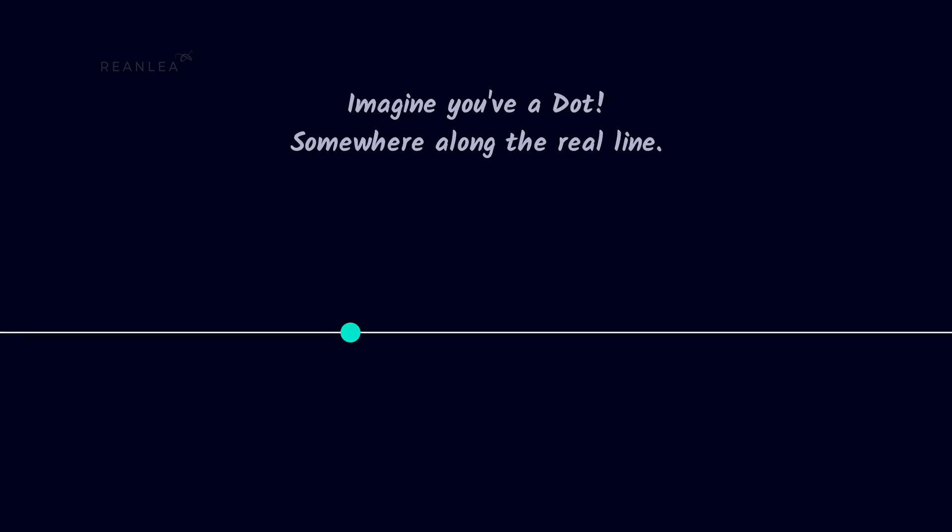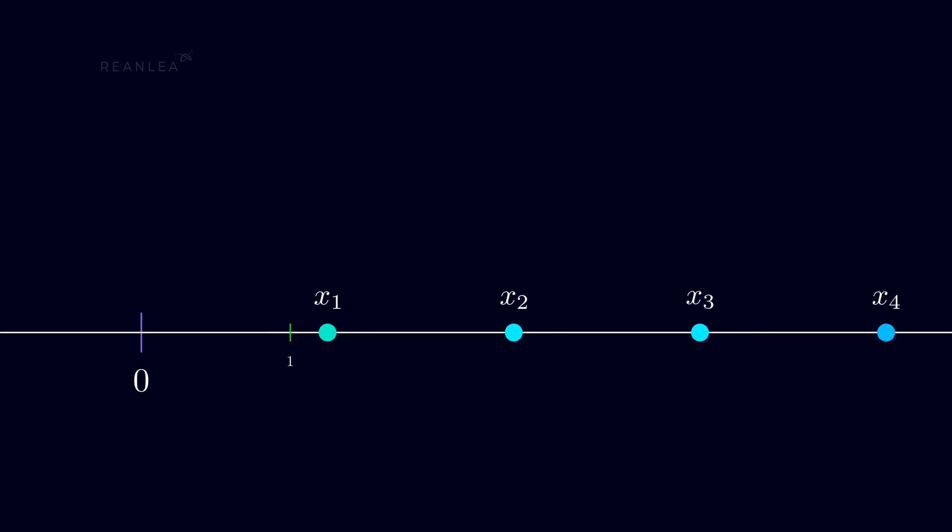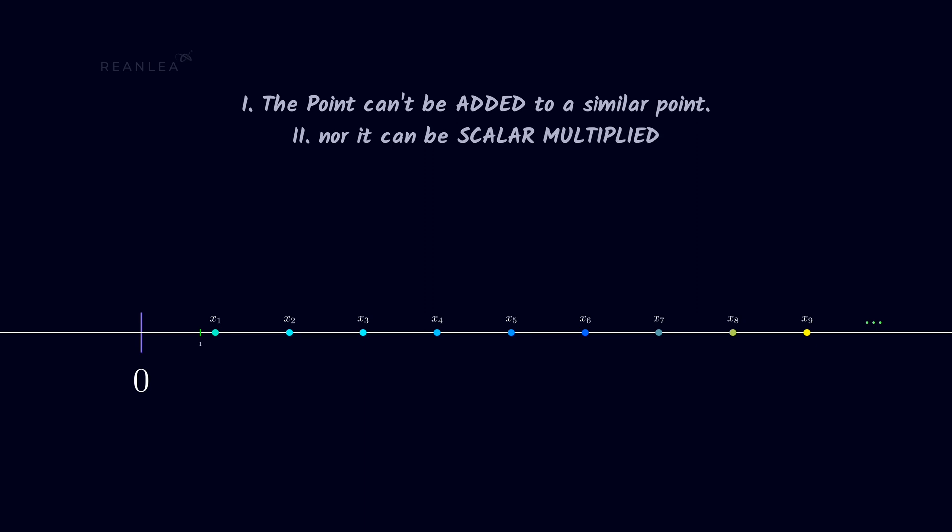Imagine you have a dot somewhere along the real line. You can think of it as a point, which has some static position on the real axis. The point has some value with respect to the origin and the unit defined on the real axis. But neither a point can be added to a similar point, nor can it be scalar multiplied.